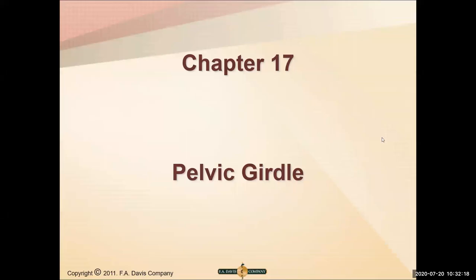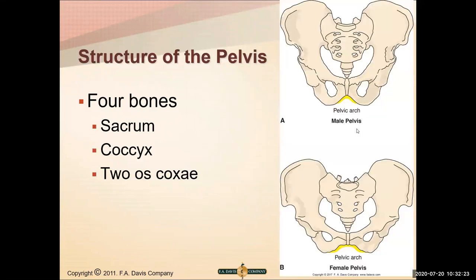We're going to talk about the pelvic girdle and a little bit about the lumbar spine in kinesiology, just talking about some of the motions. We already covered the structure of the pelvis a little bit. We have our four bones: we have our coccyx, we have our sacrum, and we have our two os coxae. That makes up our whole pelvic structure.